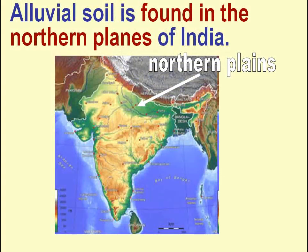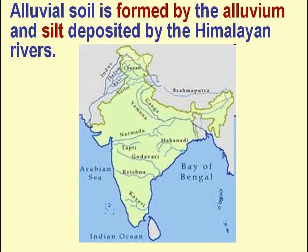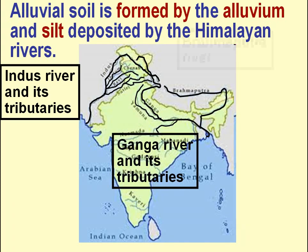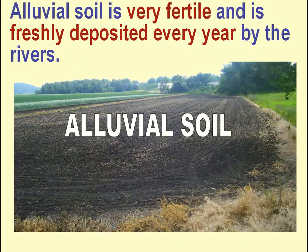Alluvial soil is found in the northern plains of India. It is formed by the alluvium and silt deposited by the Himalayan rivers. Alluvial soil is very fertile and is freshly deposited every year by the rivers.